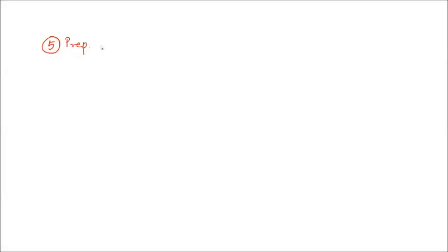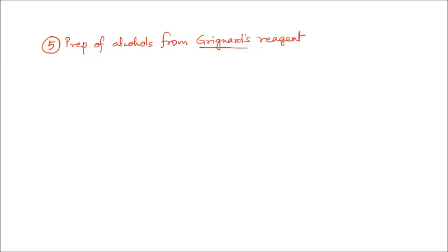Today we are going to discuss preparation of alcohols from Grignard's reagent. Grignard's reagent is R-MgX, also known as alkyl magnesium halide. We will discuss how we can prepare alcohols from Grignard's reagent.